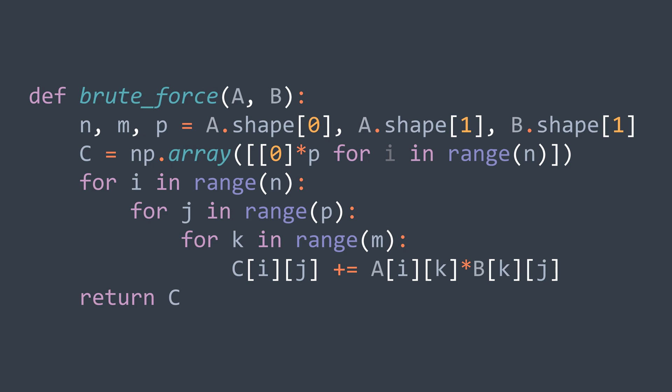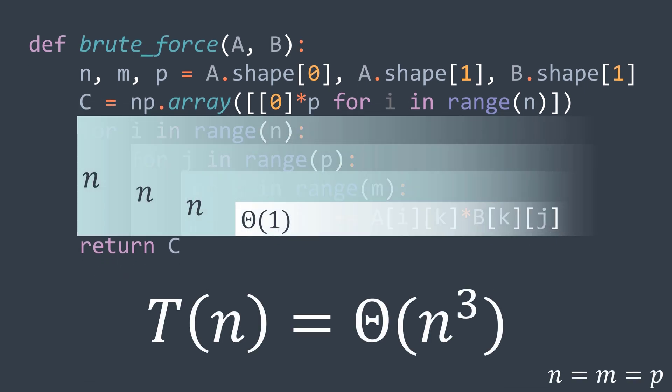This method is the brute force method. It has a time complexity of n cubed if n, m, and p are equal, which is the case for square matrices, because of the three for loops. But we have other algorithms for matrix multiplication, like the one we will see today, the Strassen's algorithm.